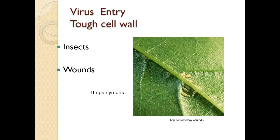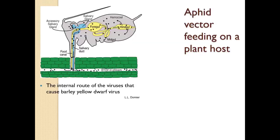Virus entry into a tough cell wall can happen through wounds, through insects — and thrips are one of the worst transmitters of viral diseases to plants. When an aphid vector feeds on a plant host, the virus comes in through the food canal and goes out through the salivary duct. This is what it looks like inside an aphid with barley yellow dwarf virus.